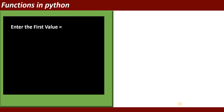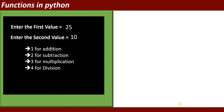How will it display the output? First, it should ask to enter the first value — you will enter 25. Then it will ask to enter the second value — suppose you are entering 10. Then it should display four options: number one for addition, number two for subtraction, number three for multiplication, and number four for division. You can enter any option from one to four.